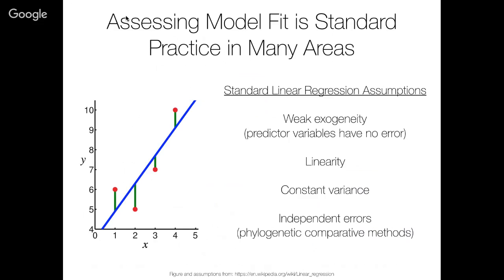Model fit is standard practice in many areas of statistics and most other areas. If we think about a simple example — standard linear regression — we have a host of assumptions that go into it. We assume that our predictive variables on the x-axis have no error, that there is actually a linear relationship between the things we're trying to model, that the errors from our observations are independent, and that we assume a constant variance. One would be hard-pressed to publish a linear regression analysis without giving some nod to these assumptions and asking whether the conclusions we're drawing are actually valid.